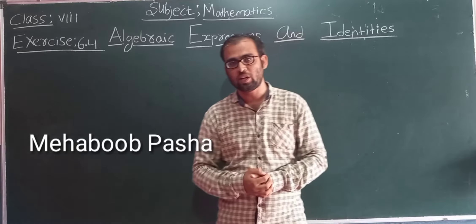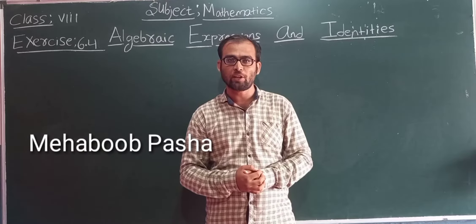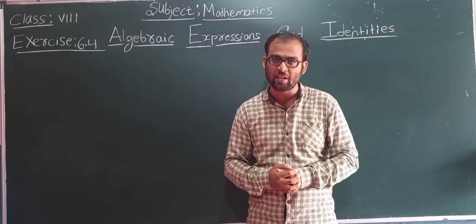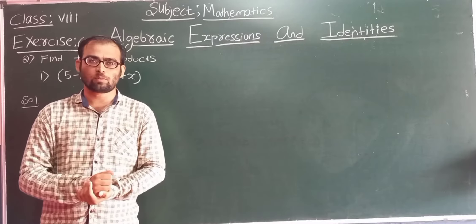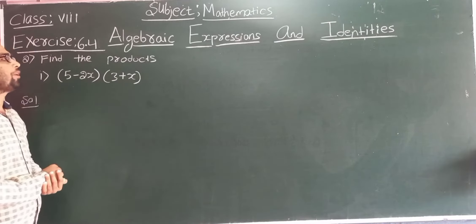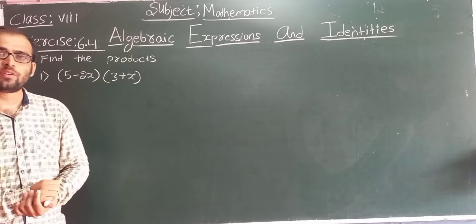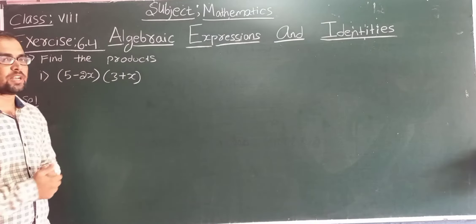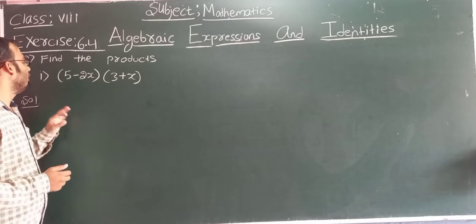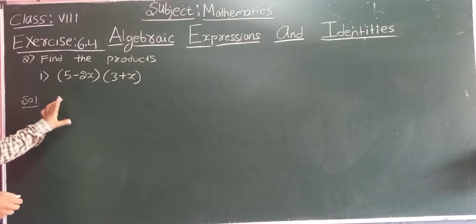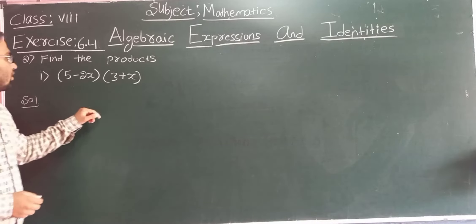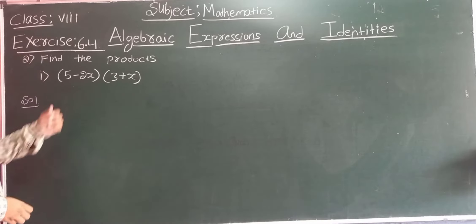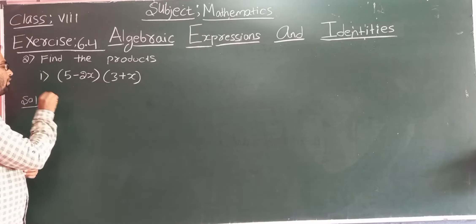Welcome students, myself Myav Pasha. Today in this session we will continue with the problems of Exercise 6.4 of algebraic expressions and identities. We will solve problems from the second question onwards. They have given some binomials and we need to find the product of these binomials. So let us solve the first one: (5 minus 2x) into (3 plus x).